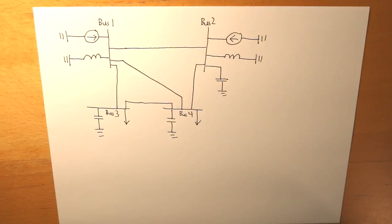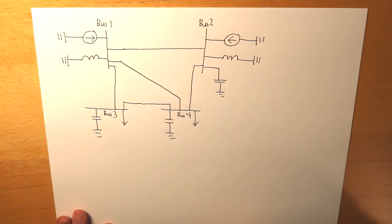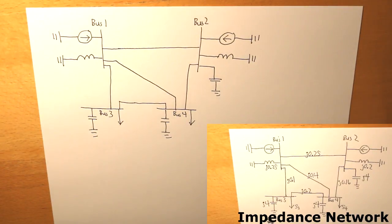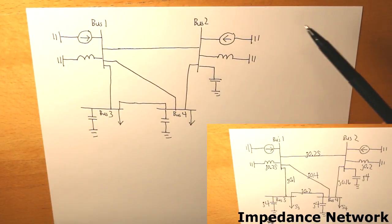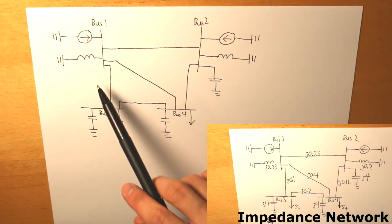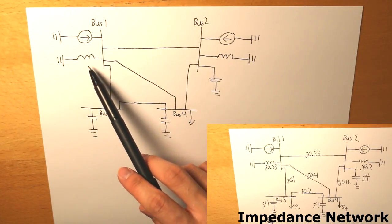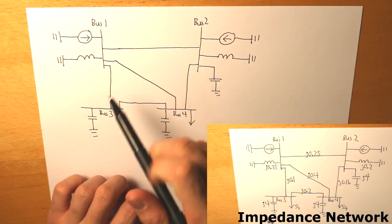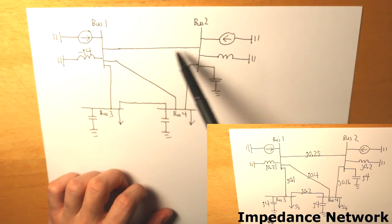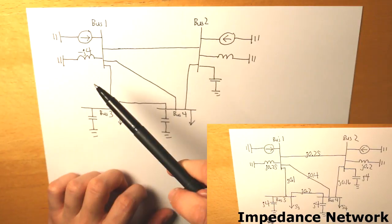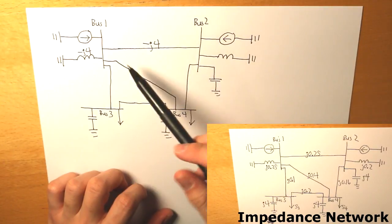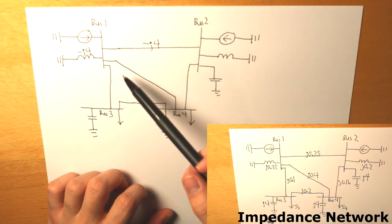Let's get to it. The first component has an impedance of j0.25, so if we take the inverse of that we get negative j over 4. For the line from bus 1 to bus 2, the impedance is also j0.25, and if we take the inverse of that we get the same thing: negative j over 4.